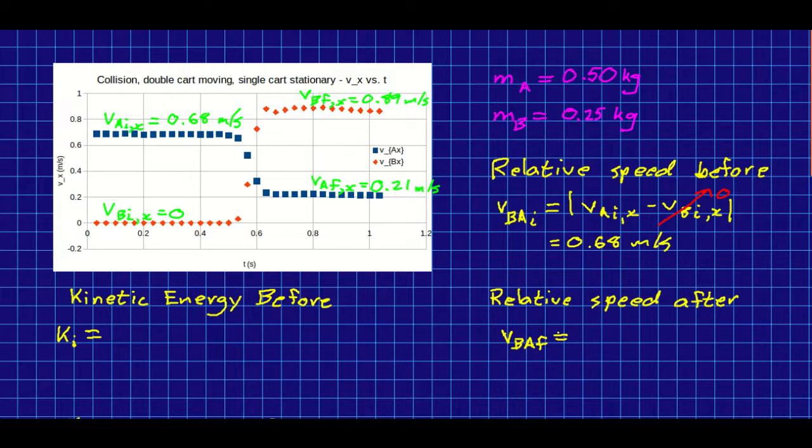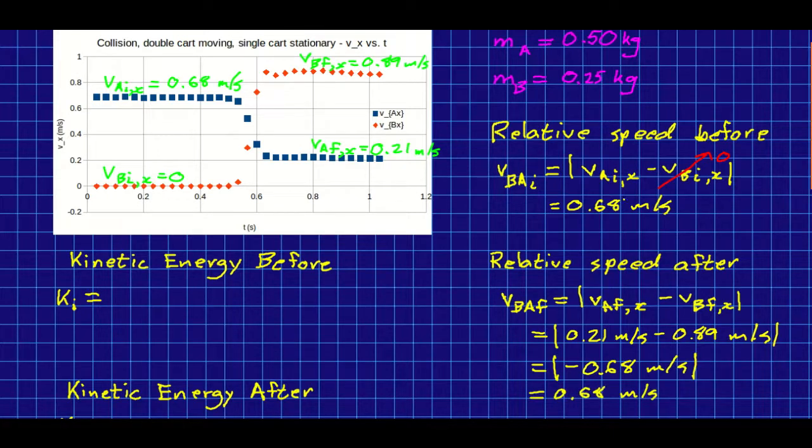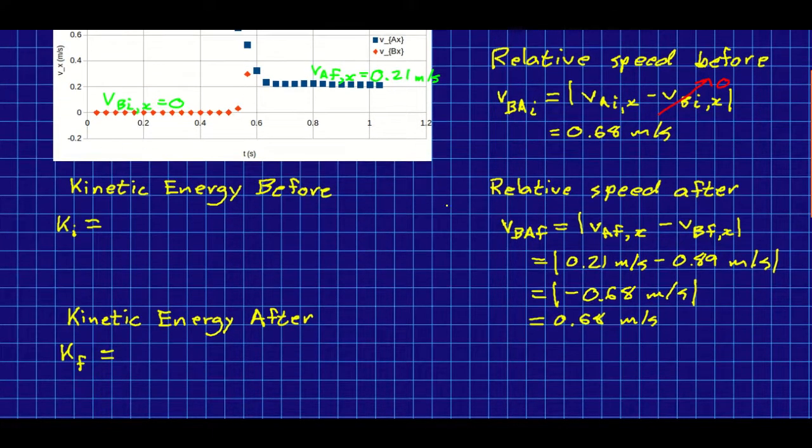So if it's elastic, we expect the relative speed after to come out to the same thing. So we do all the same stuff but with the final. And so with the absolute values, that does indeed come out to 0.68 meters per second, exactly as it was at the start. So the relative speeds are saying this is elastic.